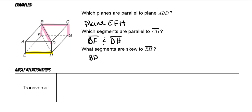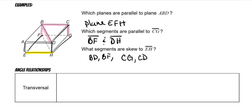So the skew segments to EH are BD, BF, CG, and also CD and AB. Some segments touch EH directly, and some are on the same plane, so those are excluded. After reviewing, the correct set includes BD, BF, CG, CD, and AB.